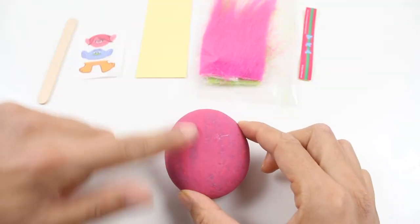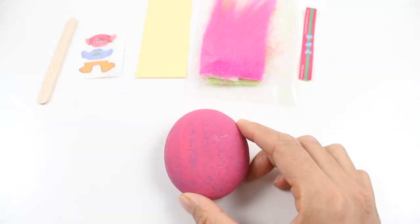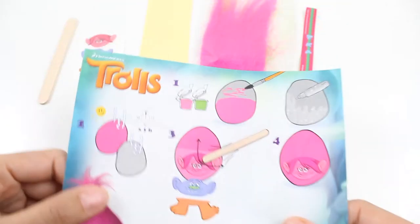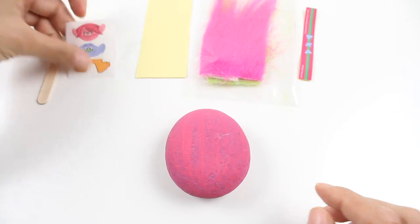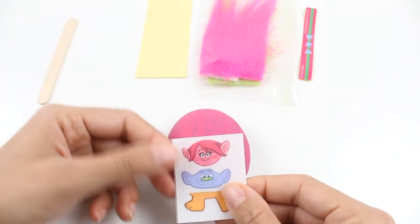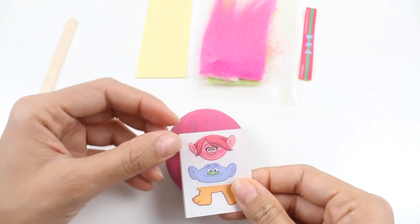Now the paint is all dry. We're going to, the next step that we have to do is we're going to put on Poppy's face. So we're going to take this and we're going to peel off the back of it.